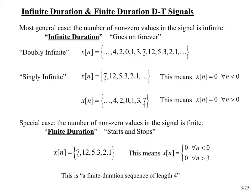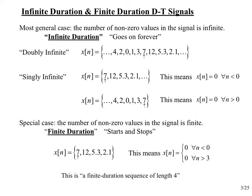Here is an illustration of the sequence way of representing a discrete time signal. We use a little upward arrow to indicate where the time origin is. On this slide, aside from illustrating the sequence format, we want to talk about infinite duration and finite duration discrete time signals. An infinite duration signal never really stops — it goes on forever in one direction or another.